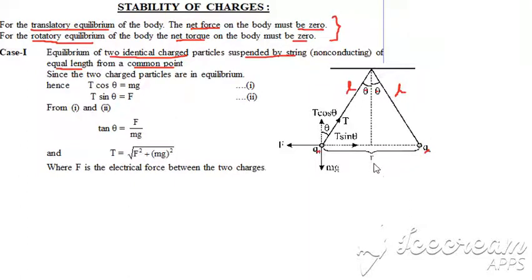Now if we draw the free body diagram of any of the particles, we will find particular forces like mg force acting downward due to gravity, the tension force acting along the string, and the force due to electrostatic or Coulombic force. So this F is a Coulombic force.